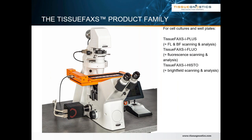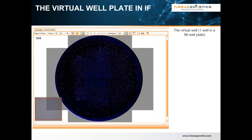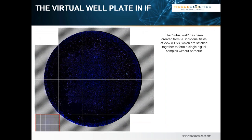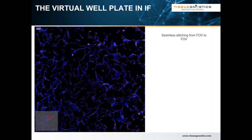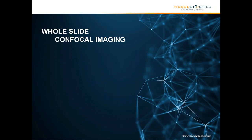Here's another configuration — this is an inverted TissueFAX system for scanning slides as well as cell cultures and well plates. These can come in a Plus configuration, which usually implies bright field and fluorescent scanning capability. Fluo is only for fluorescence and Histo is one camera only for bright field. So they can come in all these different configurations. The workflow is really what's important here — it allows us to scan slides as well as well plates. Here you can see the different fields of view that are stitched together automatically, and if we zoom in, you really can't see where those images are stitched together.